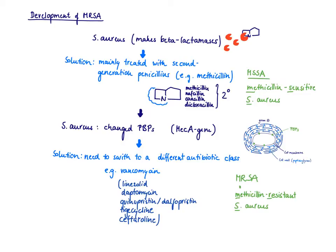So it means that any of those would work against MSSA. As we use the second-generation penicillins so often against Staph aureus, Staph aureus came up with a plan to become resistant against those second-generation penicillins. So what did Staph aureus do?